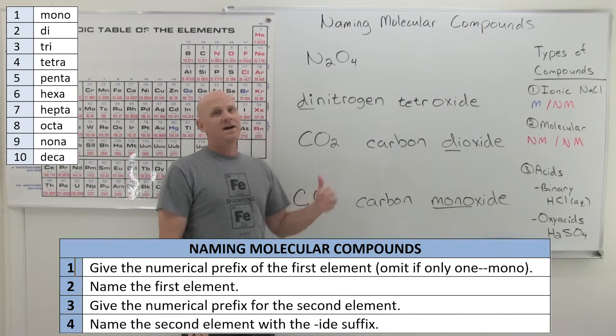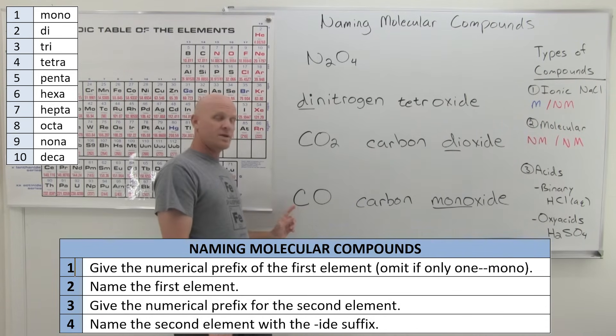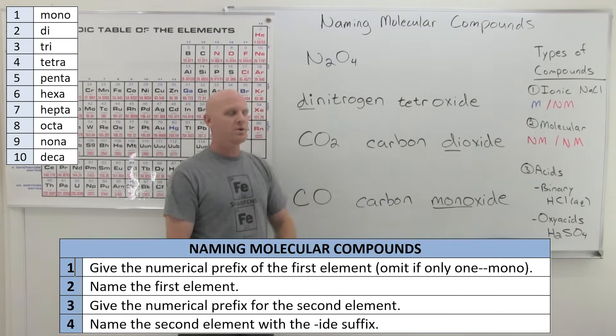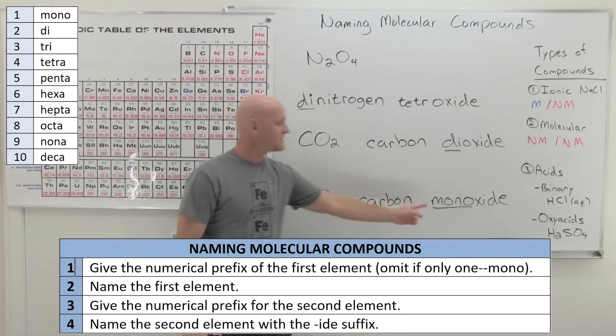Now, here's the deal. I've kind of given you the rule here that says, if you only have one of the first element, leave off the mono. If you only have one of the second elements, still include the mono.